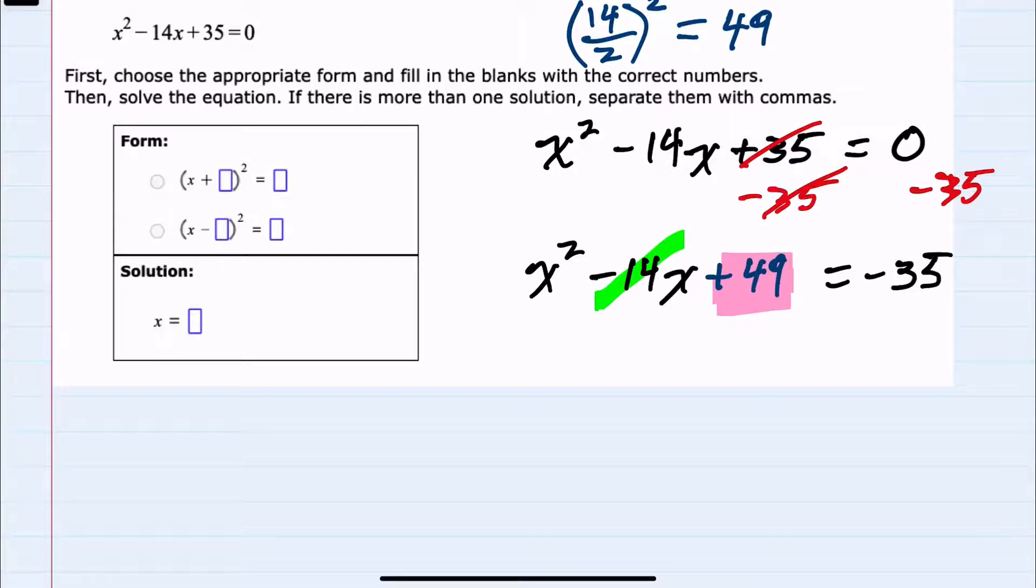The only way that I can add 49 to the left-hand side is if I also add 49 to the right-hand side. Doing so now gives me a perfect square on the left-hand side. This would factor to (x - 7)². And the right-hand side, -35 + 49 = 14.